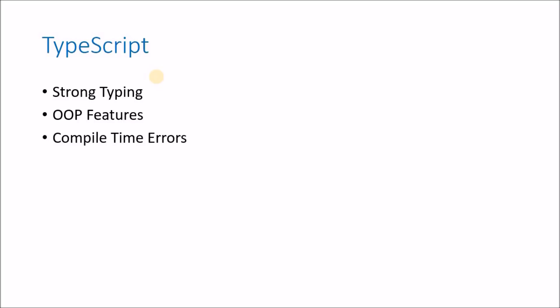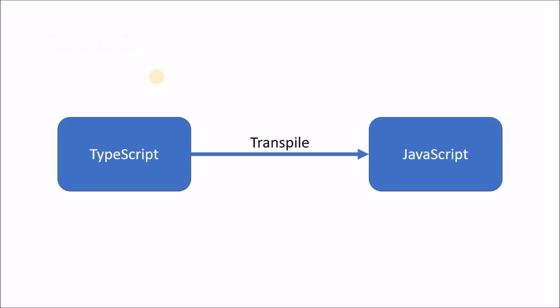Then we have a process called compile time here. In TypeScript there is some compilation involved, but to be more specific, the process is not actually compilation — we can call it transpilation, because the TypeScript code is converted to JavaScript code. Why? Because TypeScript is a superset of JavaScript and everywhere you use JavaScript you can use TypeScript to get the additional features. But the browser does not understand TypeScript; it understands JavaScript. So TypeScript code is first transpiled into JavaScript code, and this is what the TypeScript compiler does.